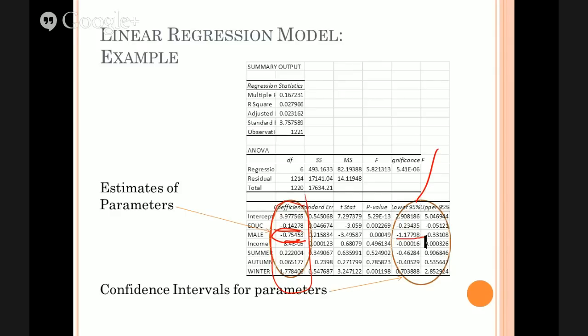But in fact, the confidence interval tells us that the effect of being male versus female could be a lot bigger than that. It could be as many as 1.17 times less on average, or it could be weaker than that, minus 0.33 times.